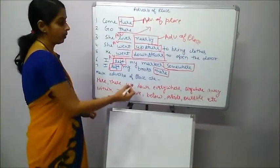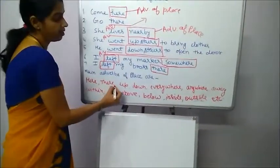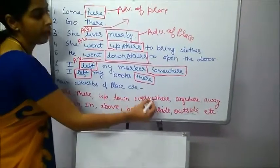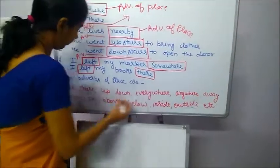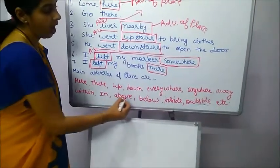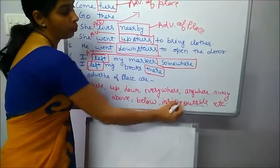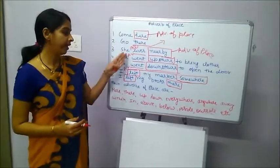Some main adverbs of place are here, there, up, down, everywhere, anywhere, away, within, in, above, below, inside, outside and many more. I have taken some examples.